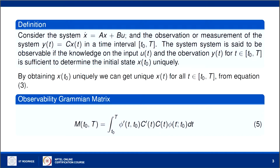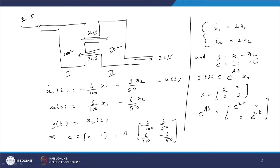Let us see the mixing problem example. There are two tanks — tank 1 and tank 2 — with salt water in both. Tank 1 contains 100 litres, tank 2 contains 50 litres. Three litres per second enters tank 1, 3 litres per second leaves tank 2, 6 litres per second flows from tank 1 to tank 2, and 3 litres per second flows from tank 2 to tank 1 — so they are circulating. The mathematical model of the amount of salt in each tank can be written accordingly.